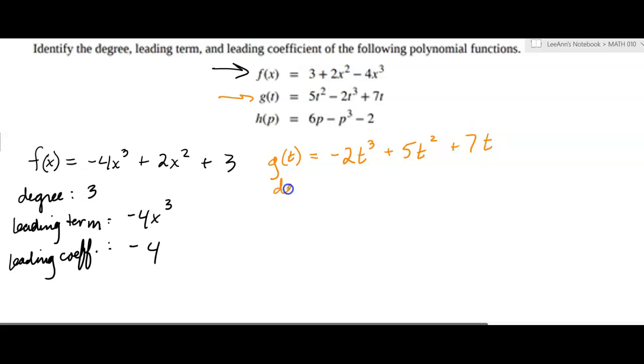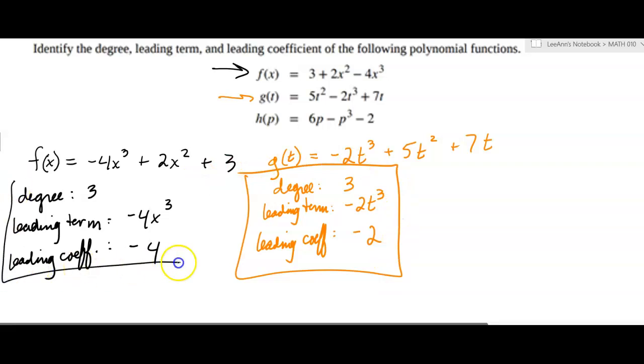My degree is 3. My leading term is negative 2t cubed. And my leading coefficient is negative 2. Okay, I'll box around that and box around that.